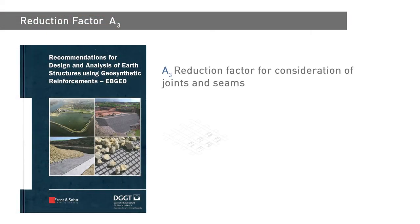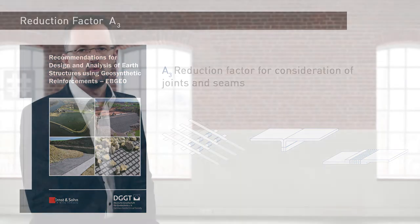Under the German EB-GEO — the recommendations for design and analysis of earth structures using geosynthetic reinforcements, issued by the German Geotechnical Society — the reduction factor for joints and seams is designated as A3.